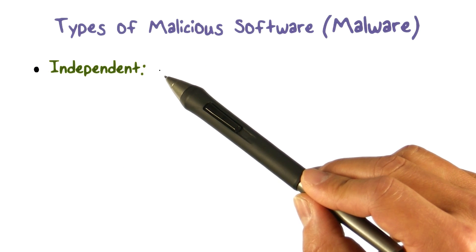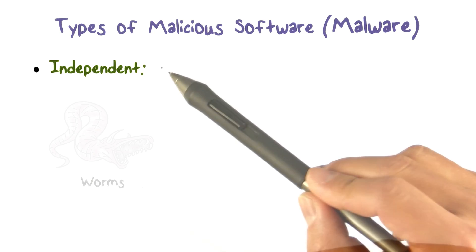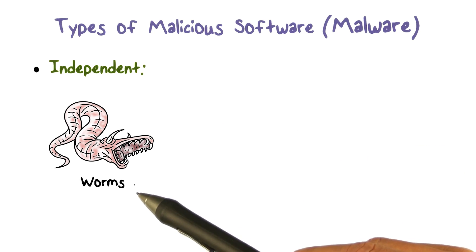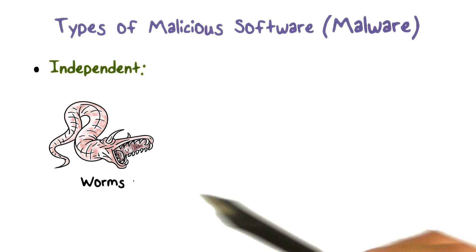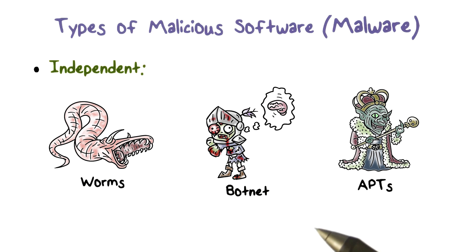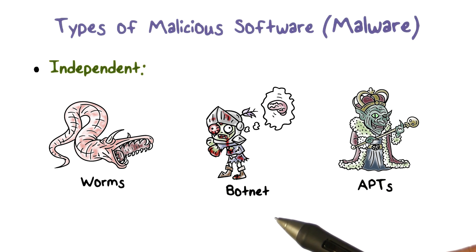An independent malware does not need a host program because these malware are complete programs by themselves. Examples include worms, botnets, and advanced persistent threats, or APTs. We will discuss botnets and APTs in a later lesson.